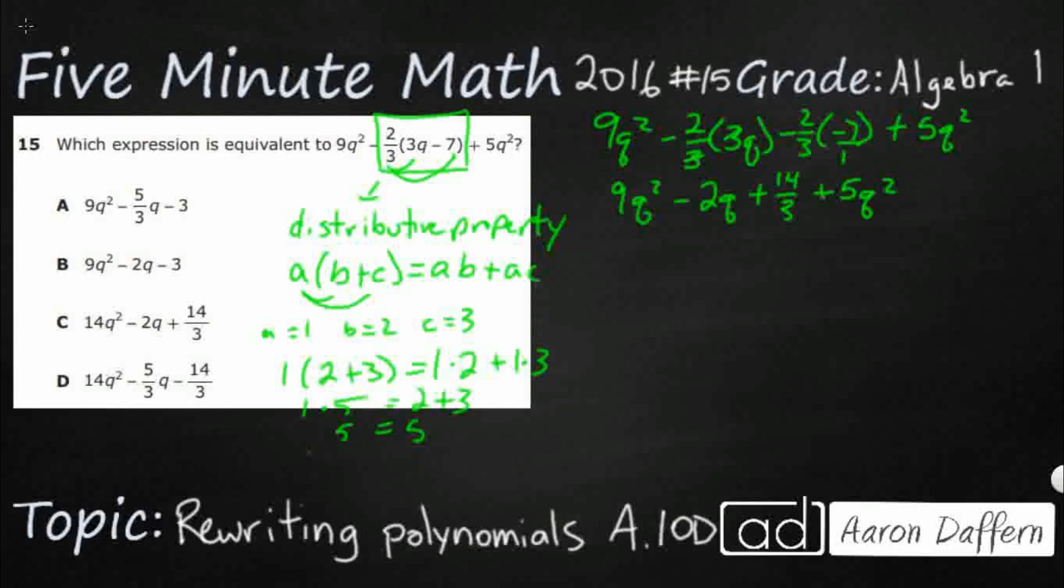Now the next thing we need to do is we always need to see if we can simplify like terms. Now here's the thing. The Q squared and the Q are totally different. I know they both have the same variable Q. But the fact that you've got this exponent here means they're apples and oranges. We're not even going to touch them. What we are going to combine is that 9Q squared plus 5Q squared. Since they're both Q squared, if we have 9Q squareds and then we have an extra 5Q squareds, we need to combine these two. So we're going to end up getting 14Q squareds. So that's the second thing is we need to combine like terms after we're done distributing out that 2 thirds with the 3Q minus 7.